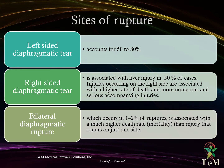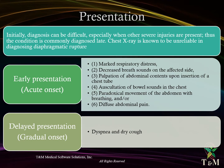Sites of diaphragmatic rupture: left-sided tear accounts for 50–80% of cases, while right-sided diaphragmatic injury is associated with liver injury in 50% of cases. Injuries occurring on the right side are associated with a higher rate of death and more numerous and serious accompanying injuries. Bilateral diaphragmatic rupture, which occurs in 1–2% of ruptures, is associated with a much higher death rate than injury occurring on just one side.